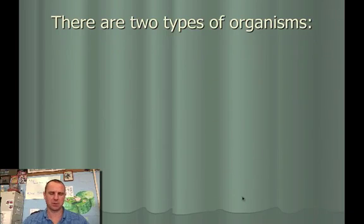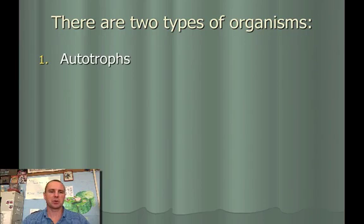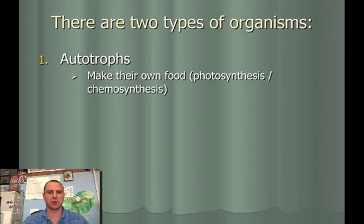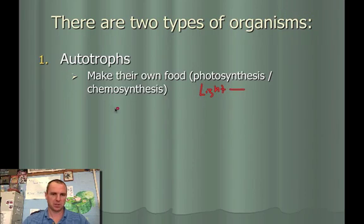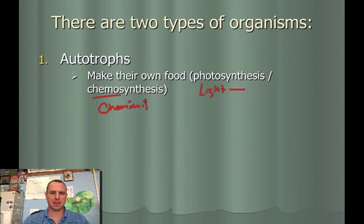There are two types of organisms when we talk about photosynthesis. We have autotrophs — auto means self, so autotroph means a self-feeder. That means they make their own food, either through photosynthesis or chemosynthesis. Photosynthesis means we use light to make food, while chemosynthesis uses chemicals to make food.